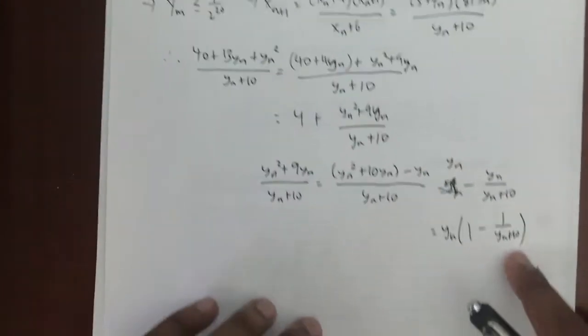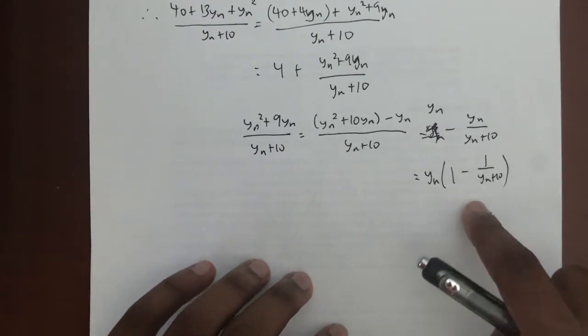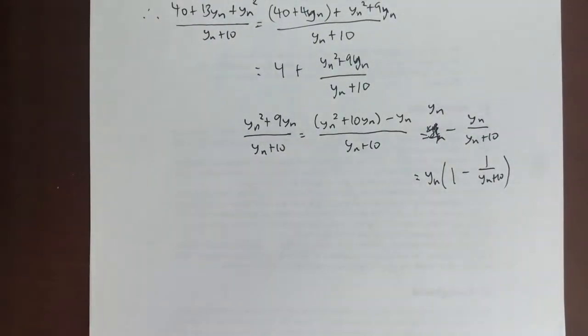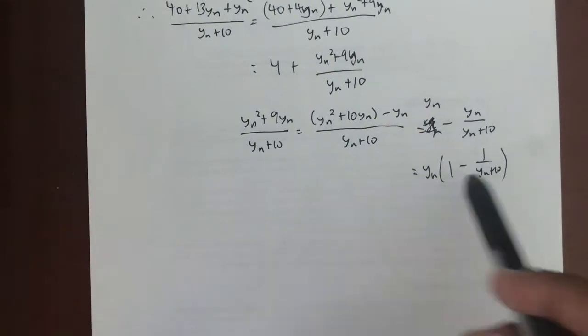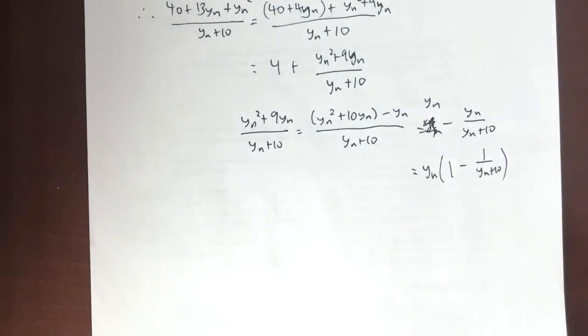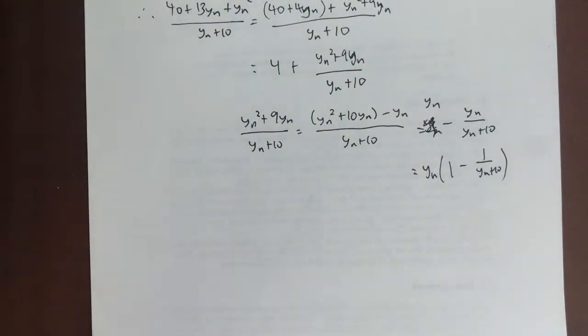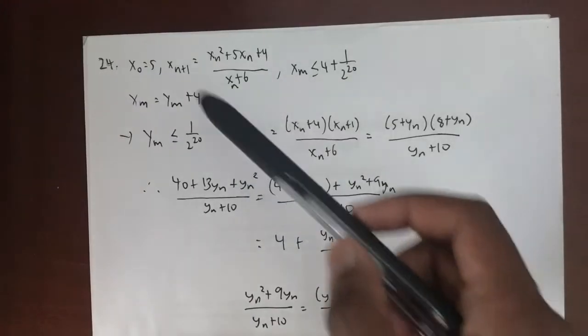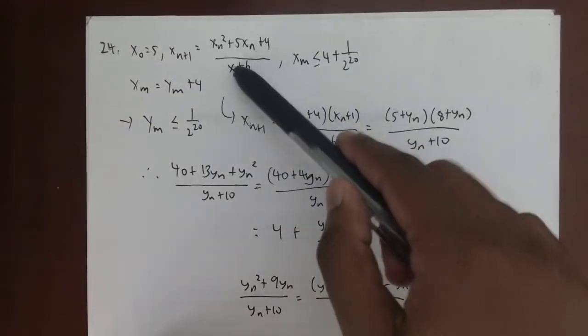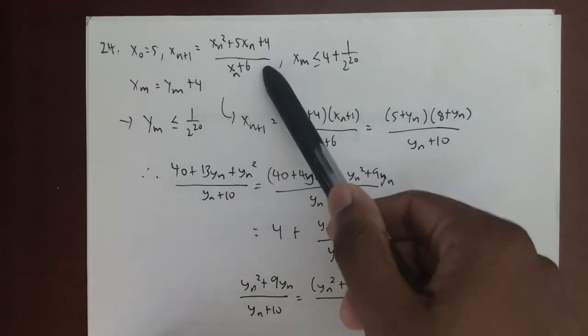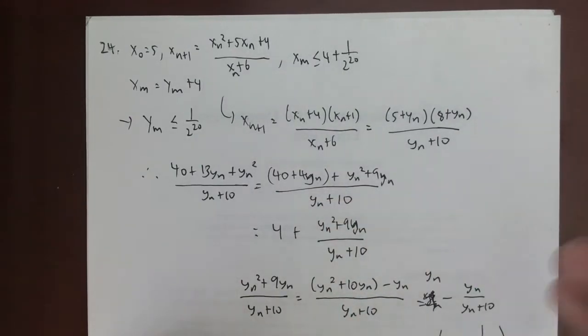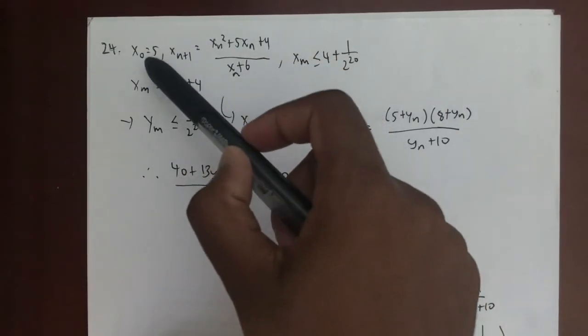Now that's pretty handy because this makes things look a lot nicer. We can rewrite this by factoring y_n to get y_n(1 - 1/(y_n + 10)). You're probably wondering how this is useful, but now we can make bounding restrictions because the answer choices are all given in intervals. We're going to have to bound this expression by intervals to see in which interval my answer would actually lie.